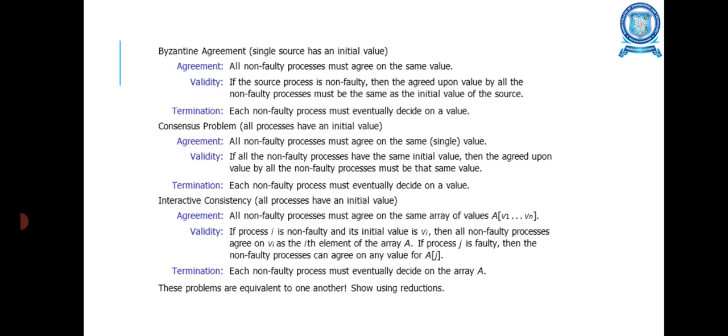Each non-faulty process must eventually decide on a value. Interactive Consistency: Agreement is that all non-faulty processes must agree on the same array of values. Validity: If process i is non-faulty and its value is Vi, then all non-faulty processes agree on Vi as the i-th element of an array. Termination: Each non-faulty process must eventually decide on an array. These problems are equivalent to one another using reductions.